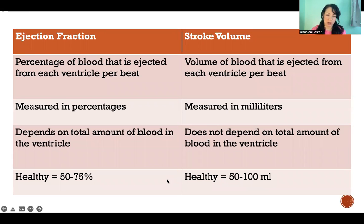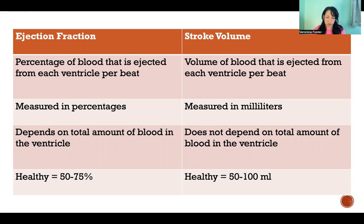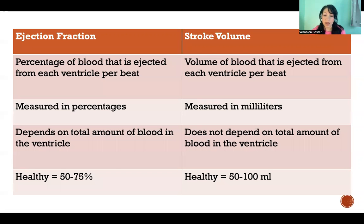Ejection fraction refers to the percentage of blood that's ejected from each ventricle per beat. Ejection fraction depends on how much blood the ventricle is filled with in the first place, and it is simply what fraction of that total amount of blood is ejected when the ventricles contract and the valves open.